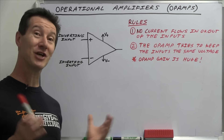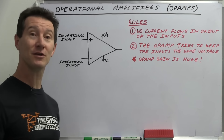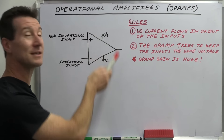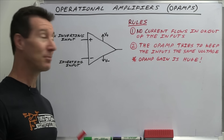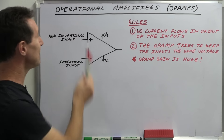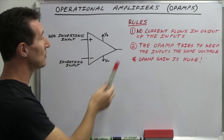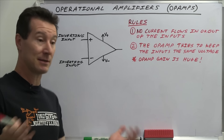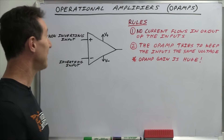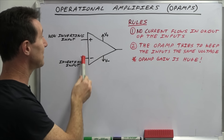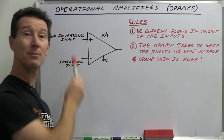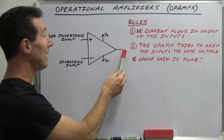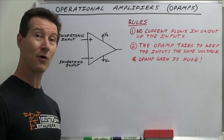So an op amp is essentially just an amplifier. Yes, it can be used for those mathematical operations, but essentially what it comes down to is this is a differential amplifier. It's got two inputs, which we'll talk about, and an output, and it's got some gain in there. What it does is it takes the difference between these two input signals, amplifies it by its internal gain, or what's called open loop gain, and gives you an output voltage.